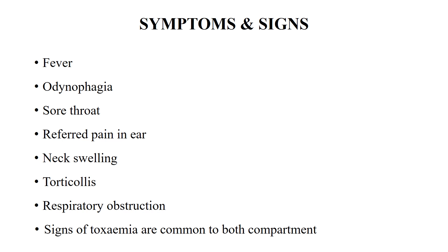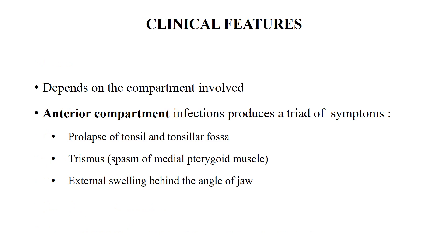Specific clinical features for the anterior compartment infection usually produce a triad of symptoms: prolapse of the tonsil and tonsillar fossa, trismus due to spasm of the medial pterygoid muscle, and external swelling behind the angle of the jaw. There is marked odynophagia associated with it.